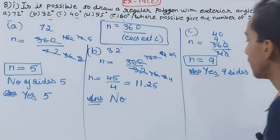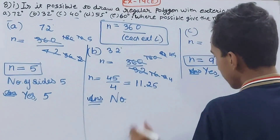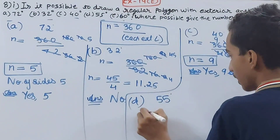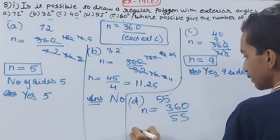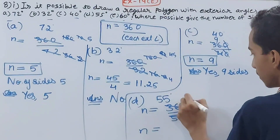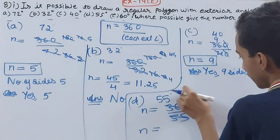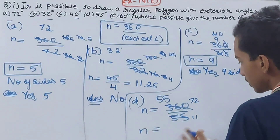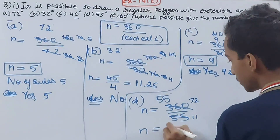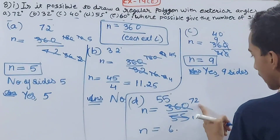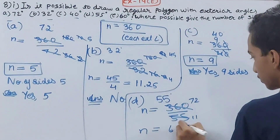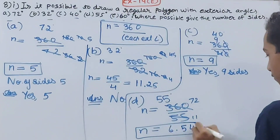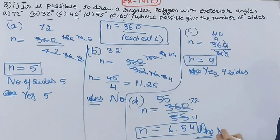For part d, the exterior angle is 55 degrees. Therefore n will be equal to 360 divided by 55. Cancelling by 5 gives 72 divided by 11. This does not cancel further and gives approximately 6.5 — a decimal value. So the final answer is no, we cannot make any polygon with an exterior angle of 55 degrees.